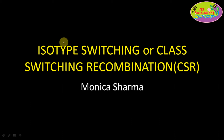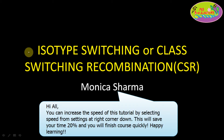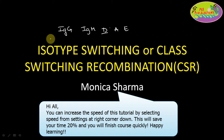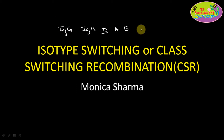Hey friends, welcome back. This is Monika Sharma, welcome to MS Bio Academy. Today we are going to talk about a very interesting topic: how in our body the B cells produce different kinds of isotypes of antibodies — different classes of antibodies like IgG, IgM, IgD, IgA, and IgE — all five types of antibody present in our body and how they are being produced.